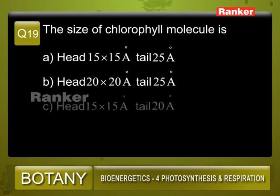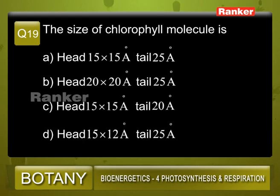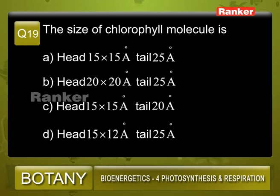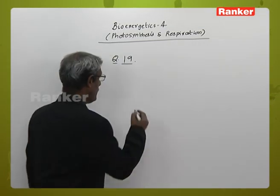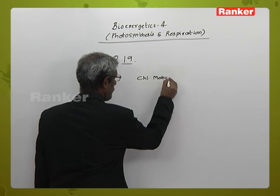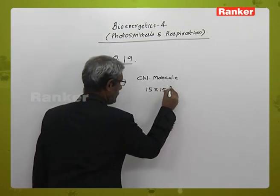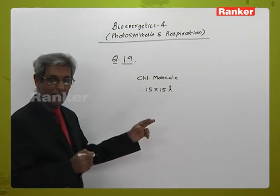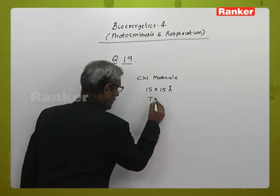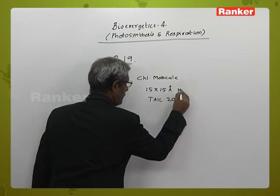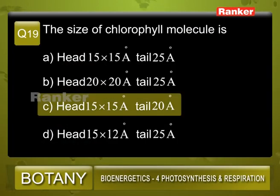Question number 19 asks the size of the chlorophyll molecule. The choices are: A: head 15×15 Angstrom units, tail 25 Angstrom units; B: head 20×20, tail 25; C: head 15×15, tail 20; D: head 15×12, tail 25. The chlorophyll molecule has a phytol head with magnesium and a very long tail. The head is symmetrical — always 15×15 Angstrom units. The tail extends by a factor of 5, so the tail is always 20 Angstrom units. Hence the answer is C.